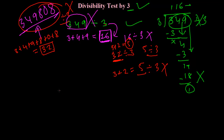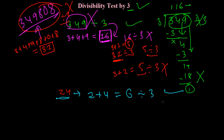Take the number 24. Is 24 divisible by 3? Simply add 2 and 4: 2 plus 4 equals 6. And 6 is divisible by 3 — it is actually a multiple of 3, since 3 times 2 equals 6. So yes, 24 is divisible by 3. The sum we are getting is a multiple of 3, so the number is divisible by 3.